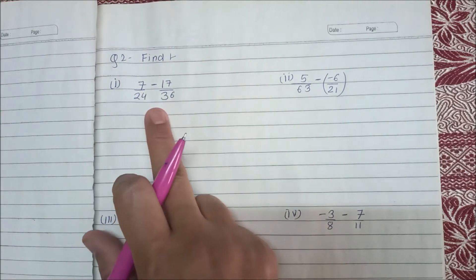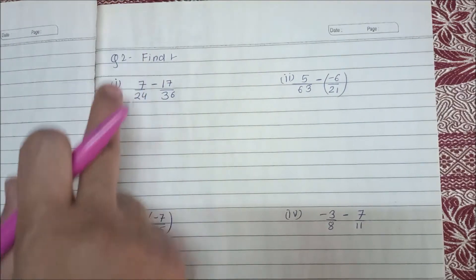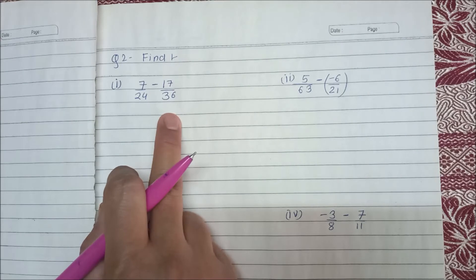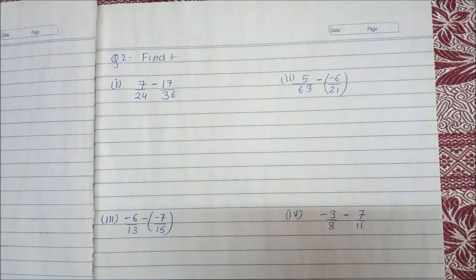So the first question is 7 upon 24 minus 17 upon 36. You guys have been told that when you have two fractions to add and subtract, then you have to do the same.